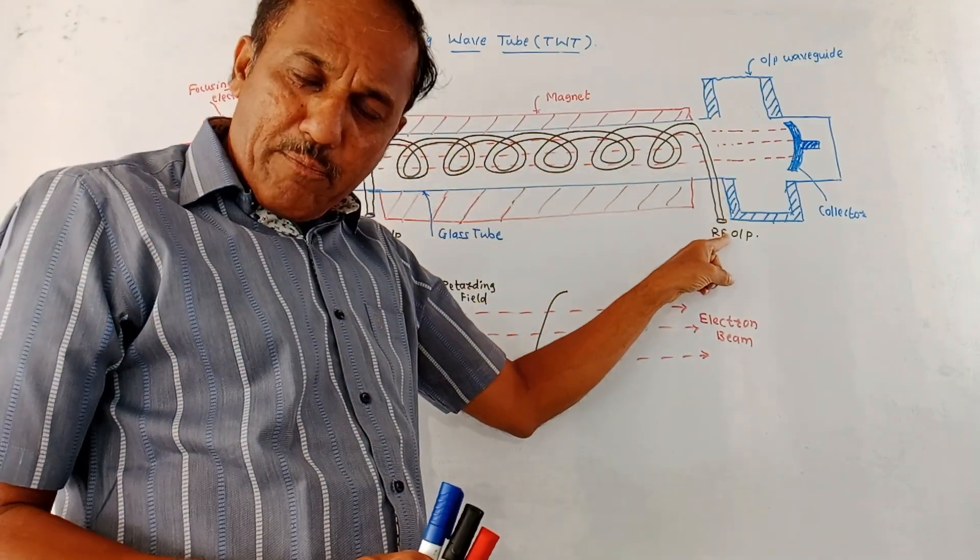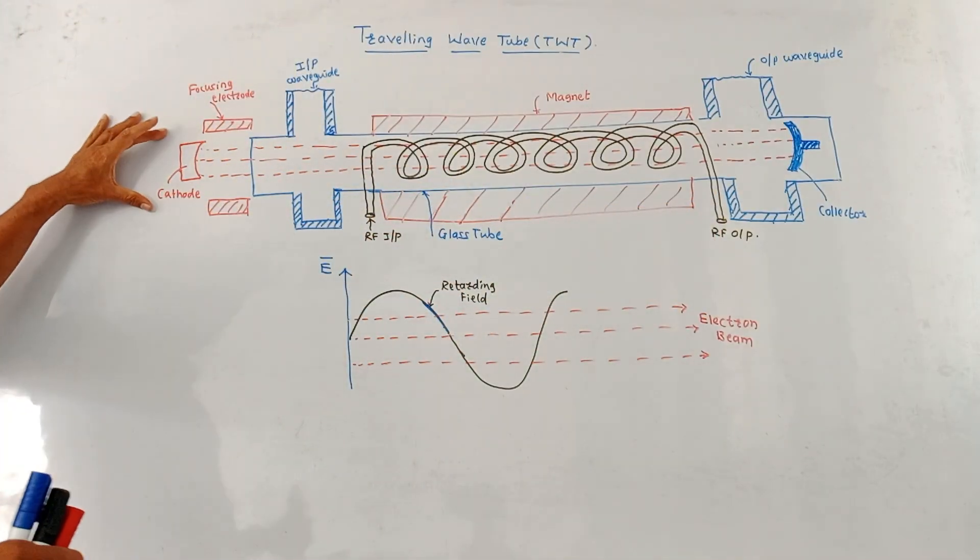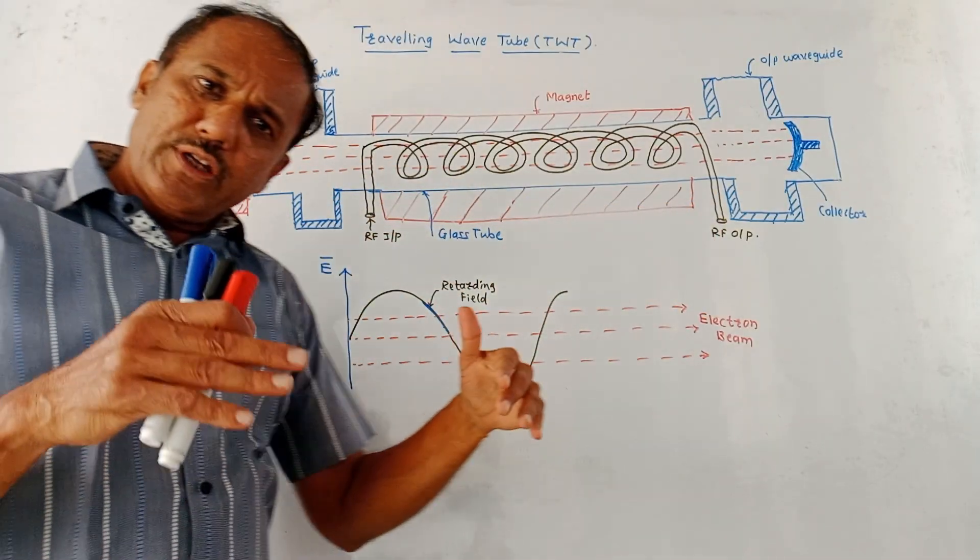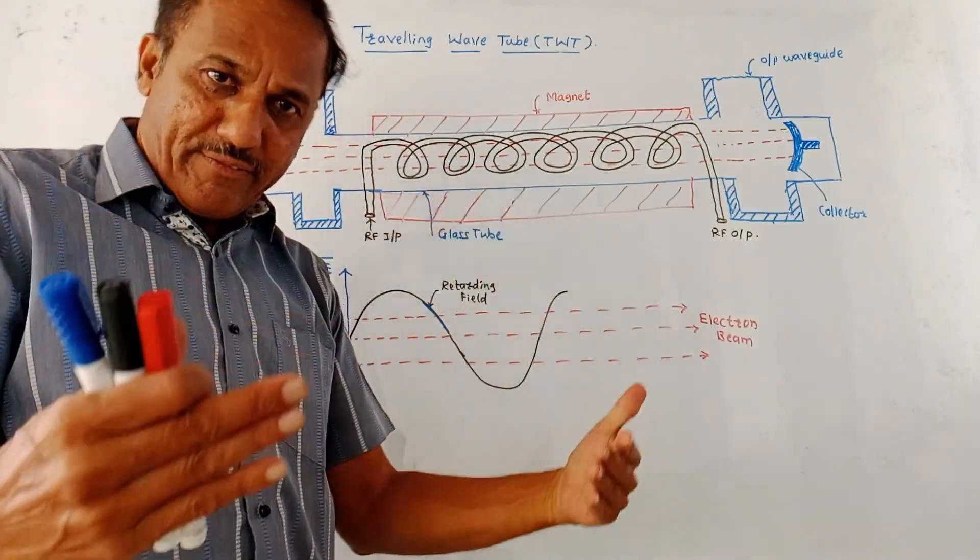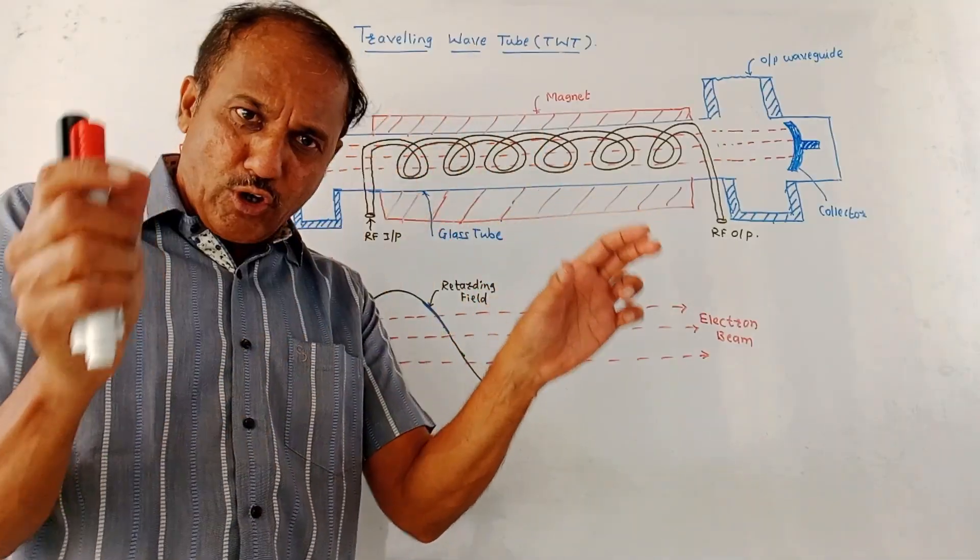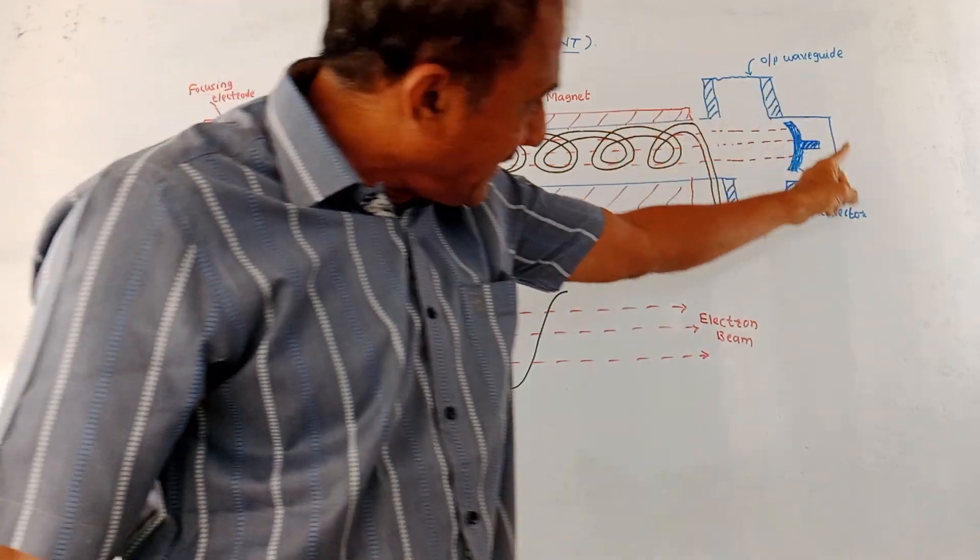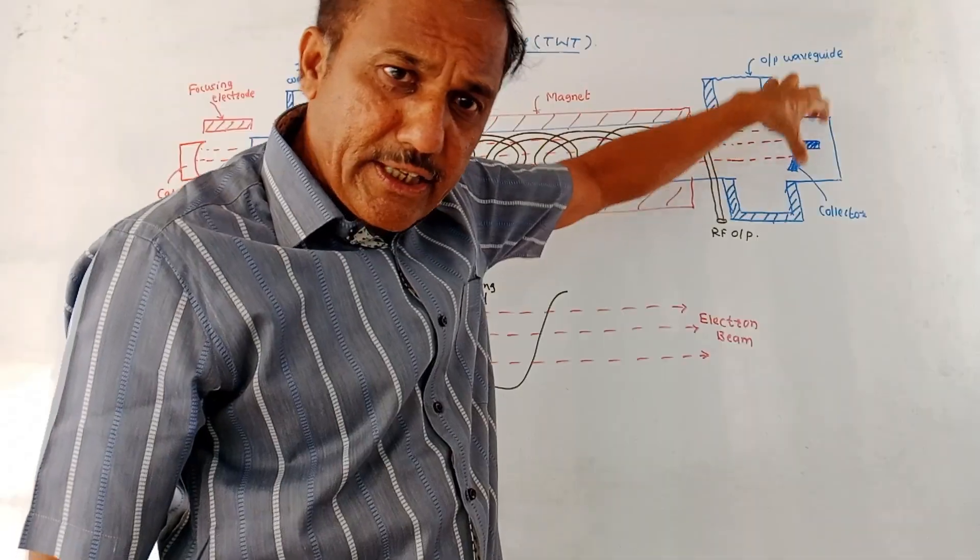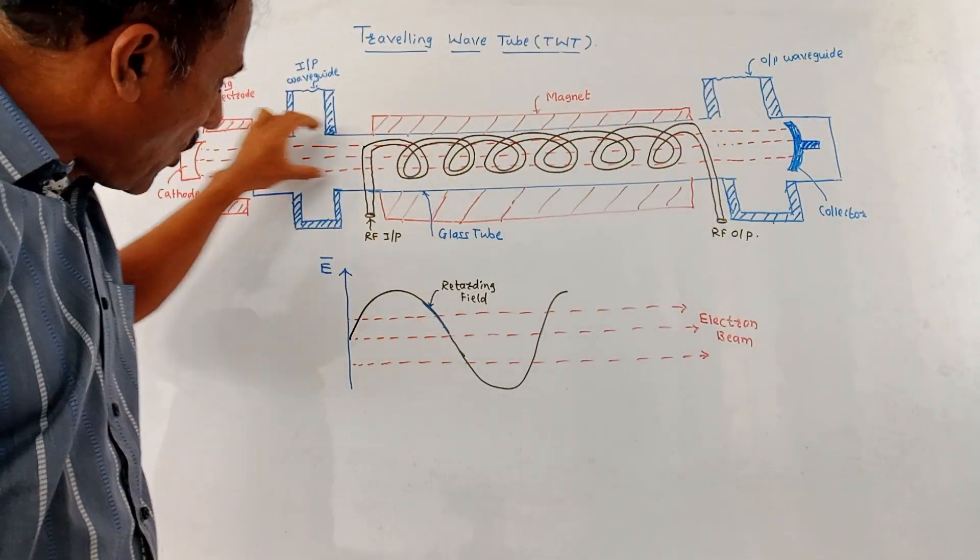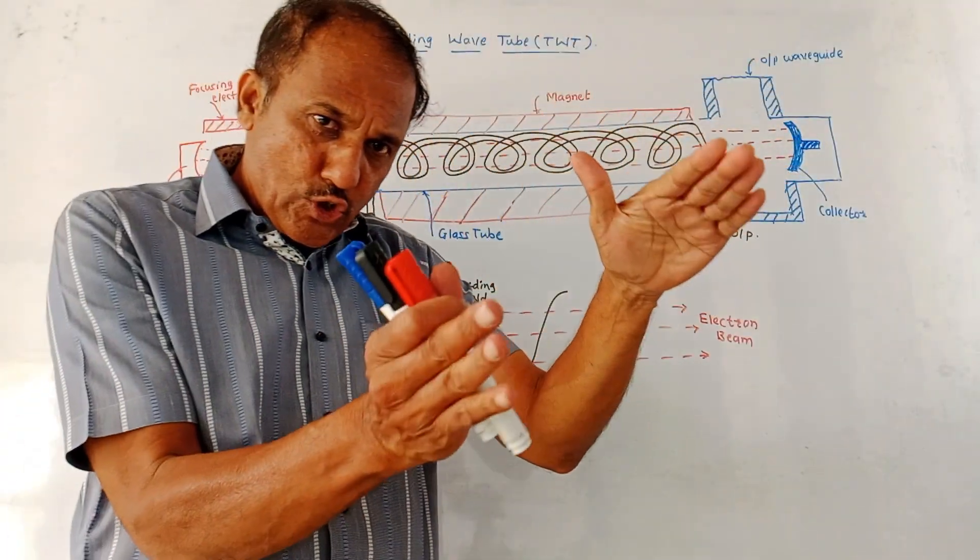At the other end, we are getting amplified output. So here I have written RF output signal. At the input side, the cathode is shown. The function of cathode is similar to the function of cathode what we studied in reflex klystron or two cavity klystron. It is used to generate the electron beam. These are the focusing electrodes. So this cathode generates electron beam which moves in the forward direction. At the other end, we have used one collector. The voltage applied to this collector is more positive. So acceleration of this electron beam takes place.